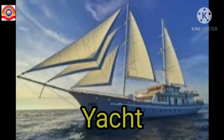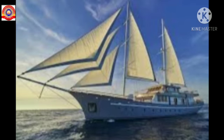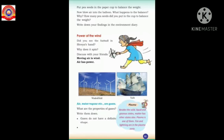This yacht is also shown in your textbook. It is a water transport device used in olden days. These yachts move when strong wind strikes on the sails, and no other fuel is used for their movement. From all these examples, we can understand that moving air is called wind and air has power.